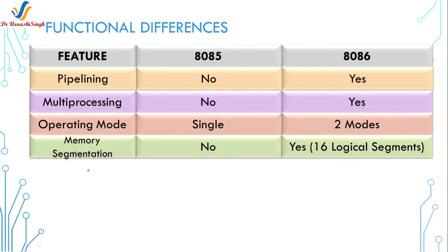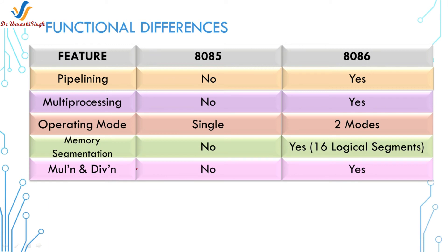After operating mode, the next feature is memory segmentation, which is a logical concept. At the time of the invention of these microprocessors, 1 MB of memory was huge for programmers to handle, so the concept of memory segmentation was invented. In 8086 there are 16 logical segments for accessing memory. In 8085 there is no need for memory segmentation because the memory size is only 64 KB. The next feature is multiplication and division: in 8085 these operations are performed using addition and subtraction instructions, while in 8086 direct instructions are provided for multiplication and division.